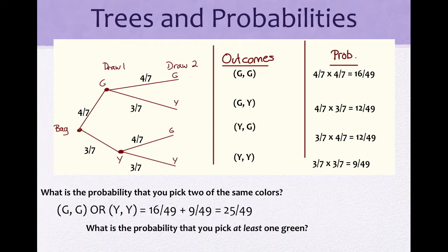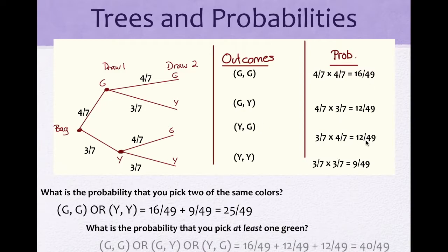What is the probability that you pick at least one green? We have green-green, or green-yellow, or yellow-green. We take those probabilities and add them: 16/49 + 12/49 + 12/49. You add the numerators and keep the denominator, giving you a probability of 40/49.